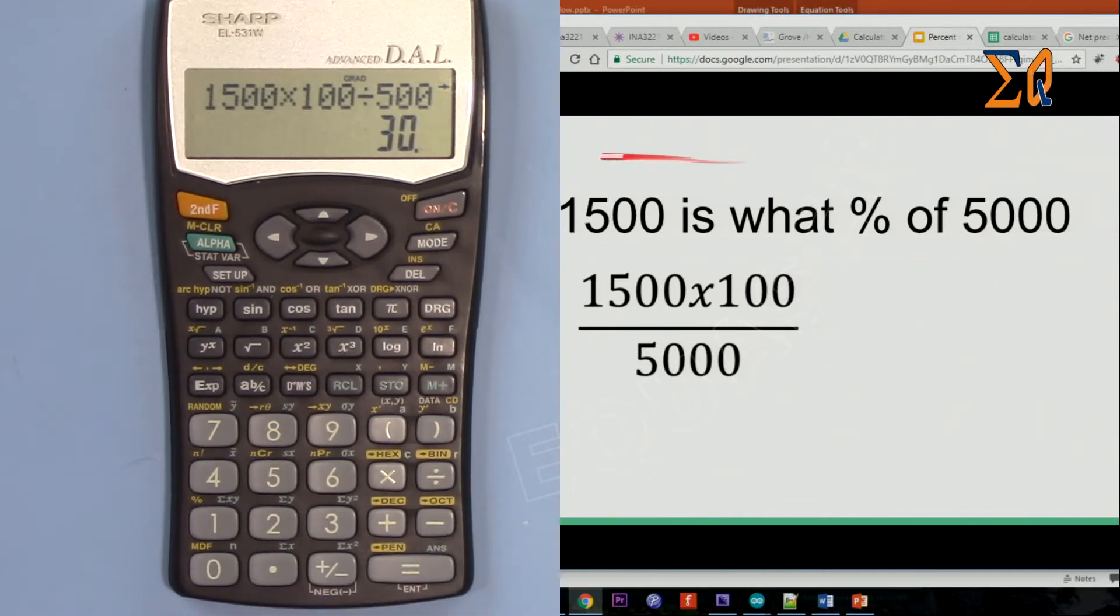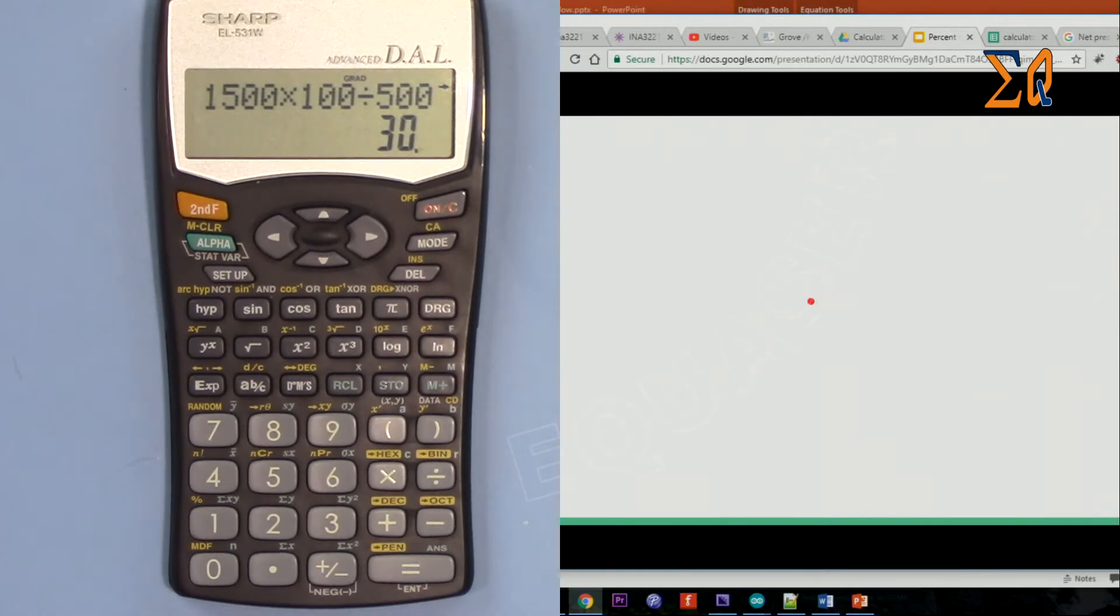Now the other way would be: 1500 is 30% of what value? We have 5000 already - we know - but let's see how we can find it.